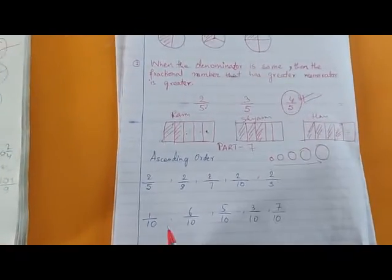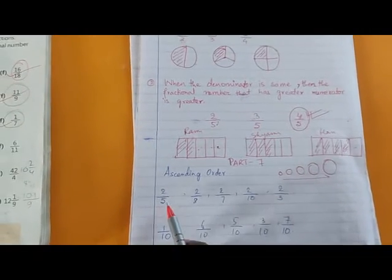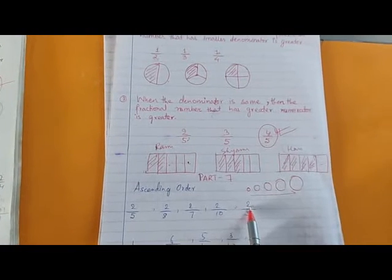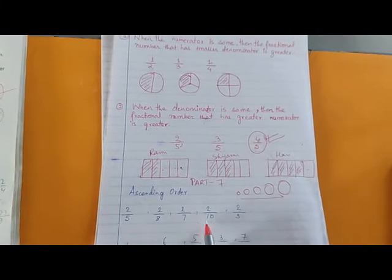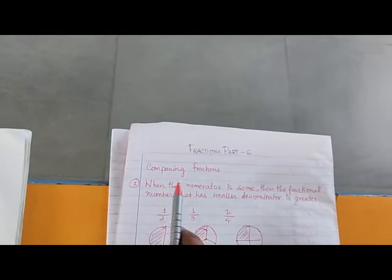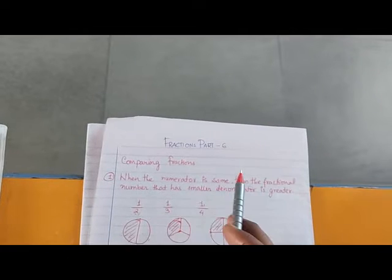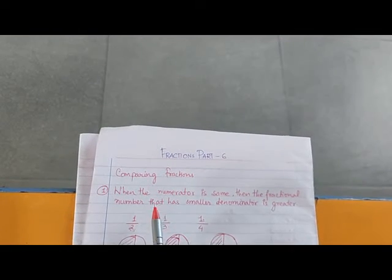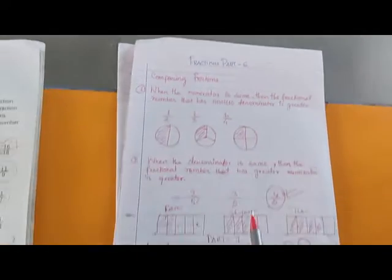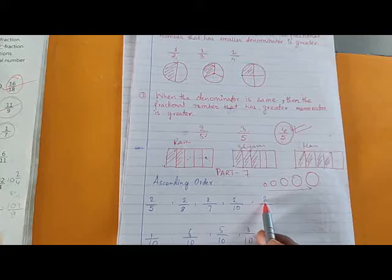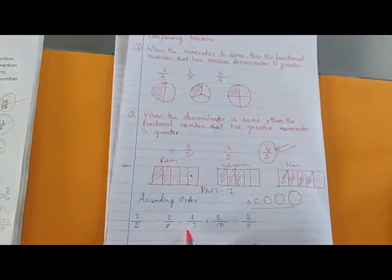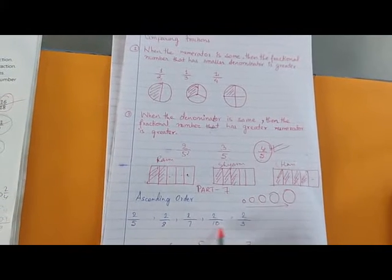So let us start. In the first question, as you can see, all the numerators are same. That means we have to determine the fractions by looking at the denominator. The rule we will follow is: when the numerator is same, the fractional number that has the smaller denominator is greater.